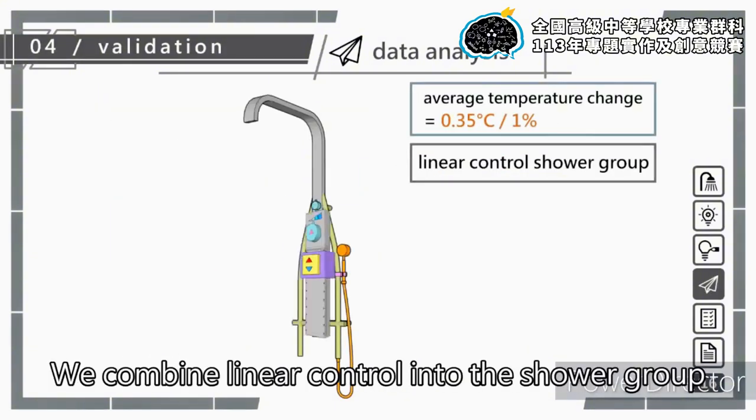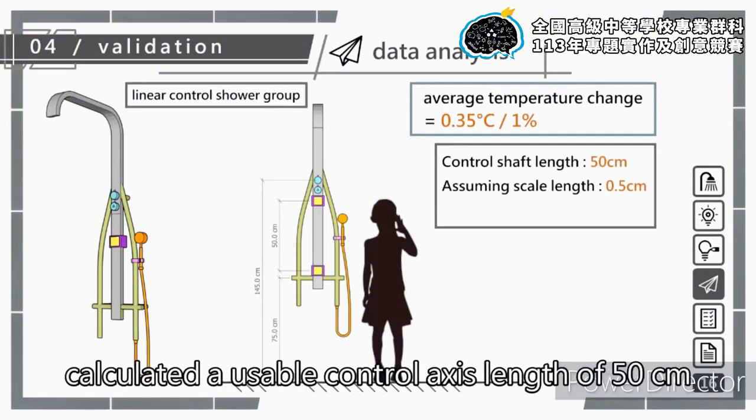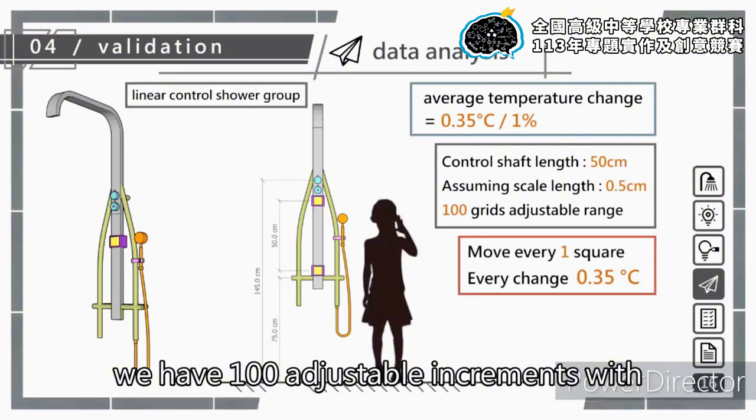Next, we combined linear control into the shower group. Based on the height accessible to children and the outlet position, we calculated a usable control axis length of 50 cm. Assuming each marking is 0.5 cm, we have 100 adjustable increments with an average change of 0.35 degrees per increment.